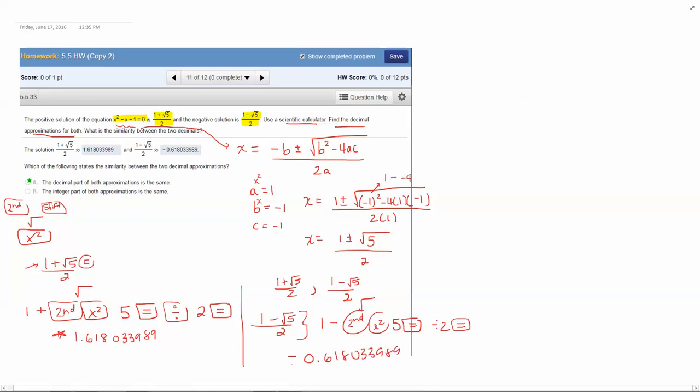Now these numbers are not the same. One is 1.618 and the other is negative 0.618. So they are very different numbers.